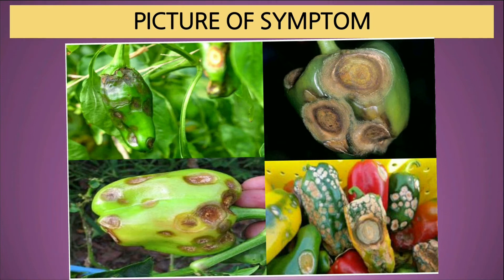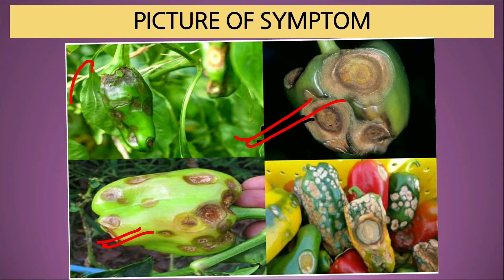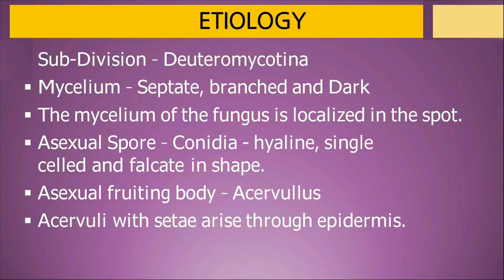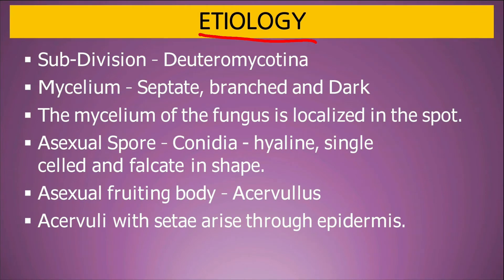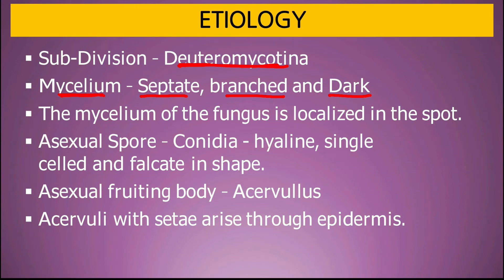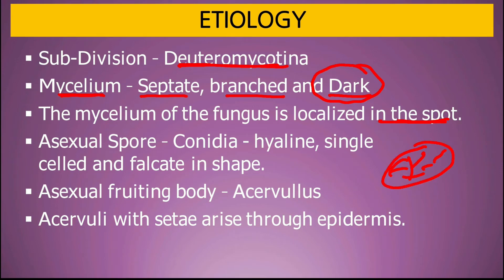Ripe fruit rot में fruits में spots बनते हैं जो elliptical हो जाते हैं — धसे हुए, black margin के साथ। Etiology: Colletotrichum belongs to subdivision Deuteromycotina. इसके mycelium septate, branched और dark होते हैं। Cell wall में melanin chemical होता है जिससे यह dark दिखते हैं। Mycelium is localized in the spots — systemic नहीं होते।